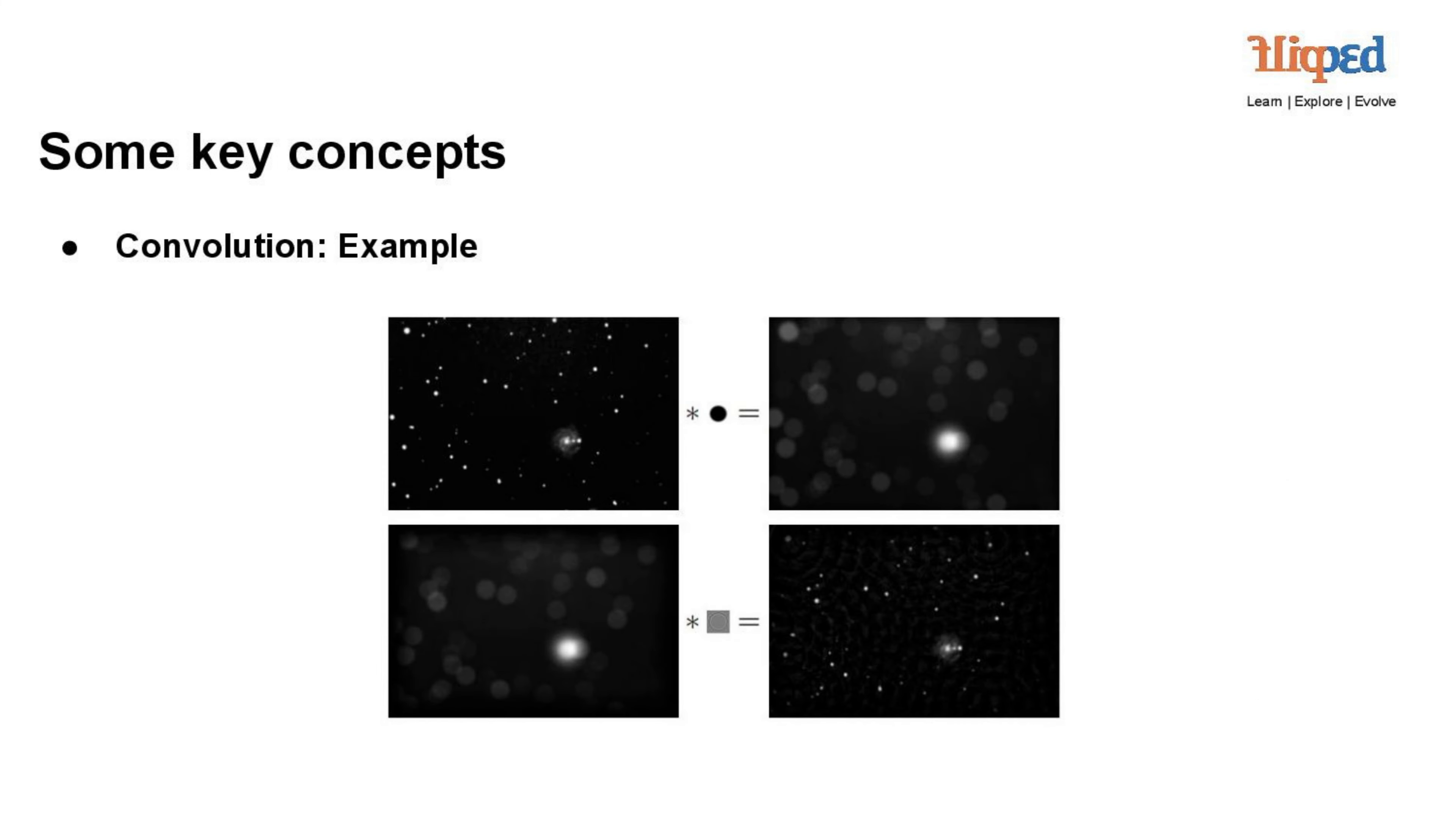The image illustrates the concept of convolution and its application in image processing. Let's break down the process step-by-step: original image of stars. The initial image is a picture of stars, representing a clear and well-defined scene.